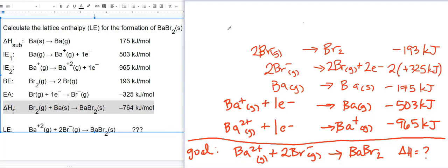The only reaction I haven't used yet is the enthalpy of formation, delta H sub F. That reaction is going to help me cancel out my Br2. So I have Br2 plus Ba solid, forming BaBr2 solid. That's the formation of BaBr2 solid. I don't have to flip that, because that's going to give me my BaBr2 that I'm looking for in my goal reaction as a product.